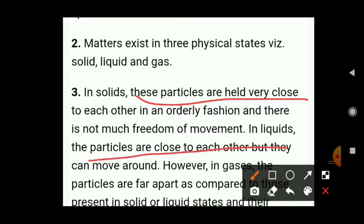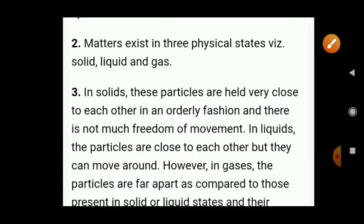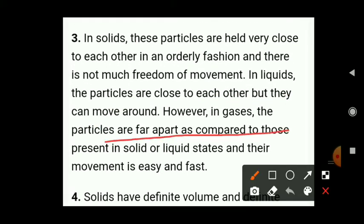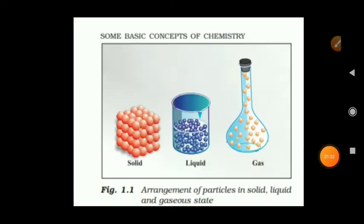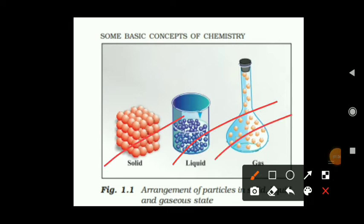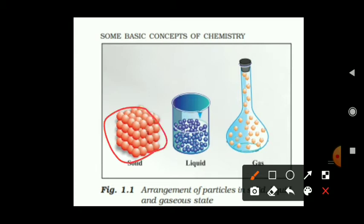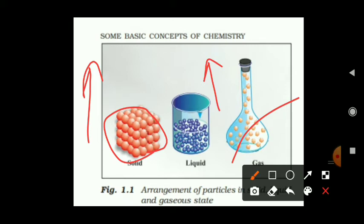In liquids, the particles are close to each other but they can move around slightly. In gases, particles are far apart compared to those in solid and liquid states, and their movement is easy and fast. In solids, force of attraction is great and about 90% mass is occupied; in liquids, 70% mass is occupied; and in gases, 20% mass is occupied.